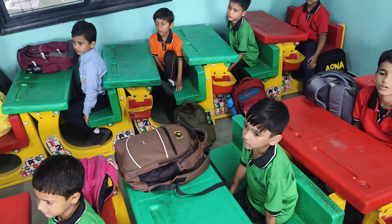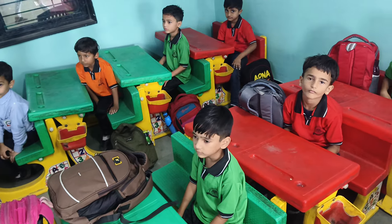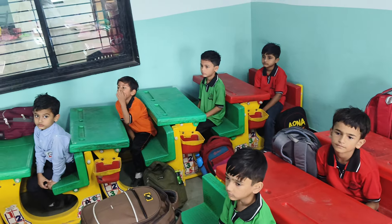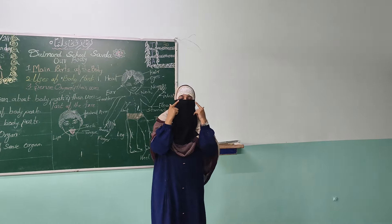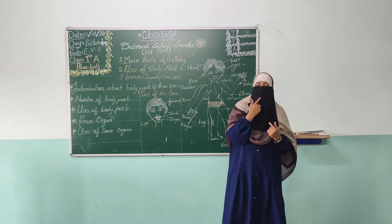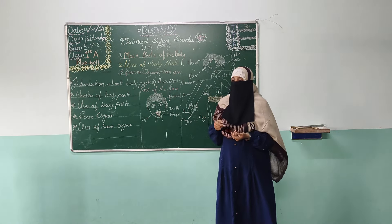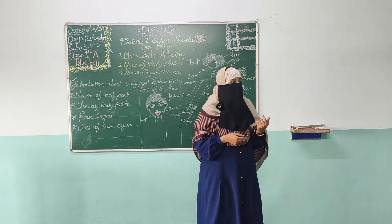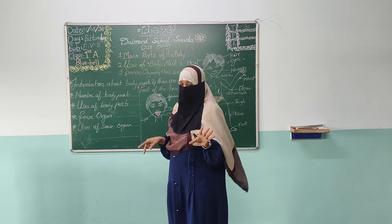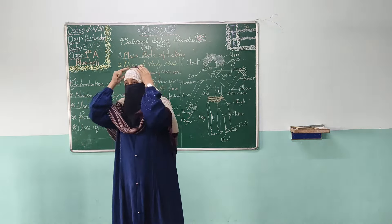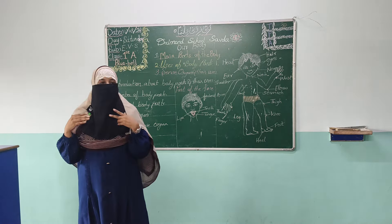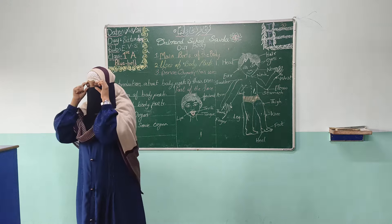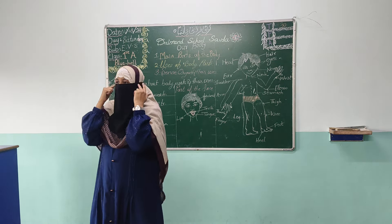Now we learn about the uses of the body parts. What is the use of head? Head is the main part of the body. It is the starting point of our body. It consists of all the face parts like eyes, nose, ear, mouth, chin, and hair. Our head is covered with hair. We have so many hairs we can't count them.